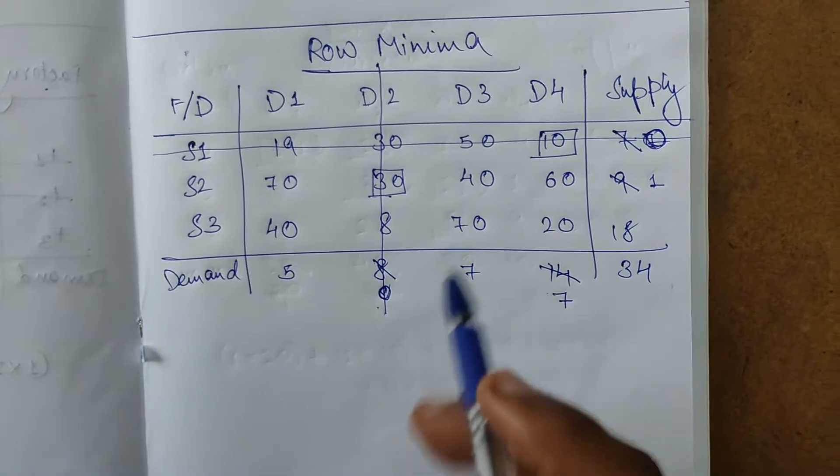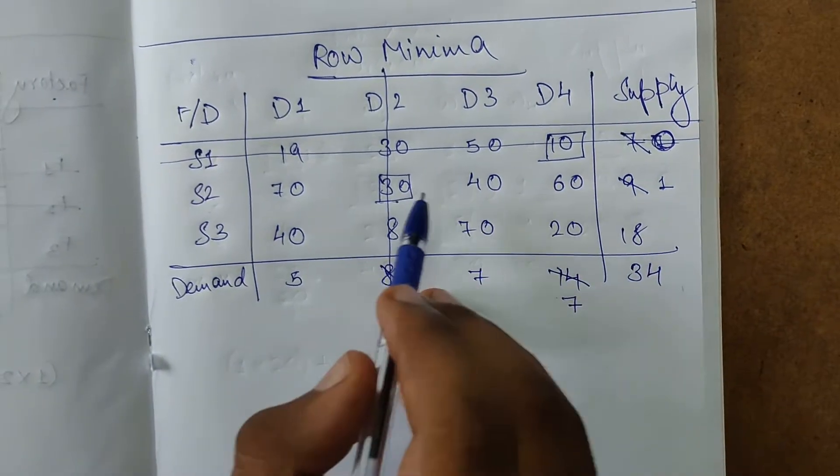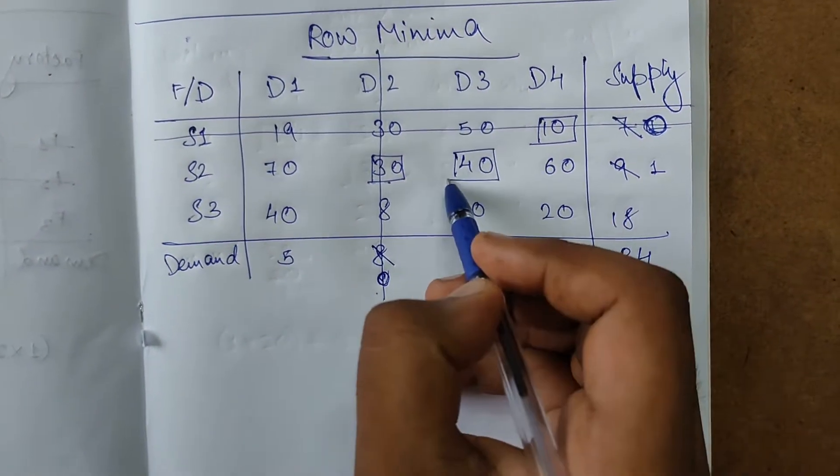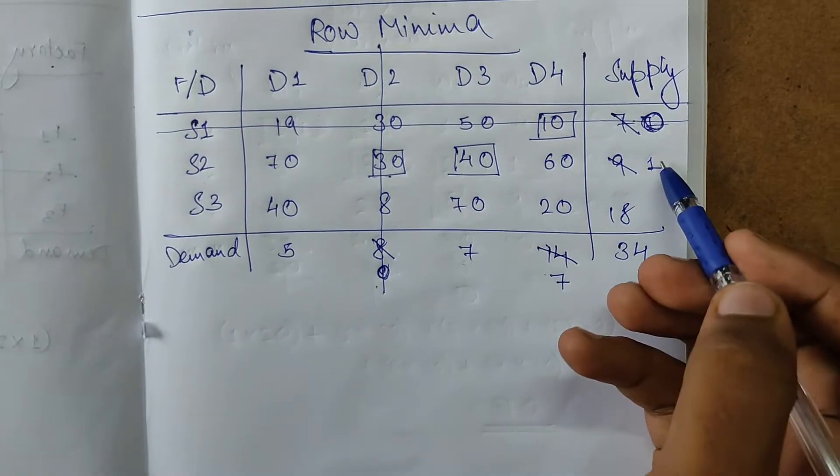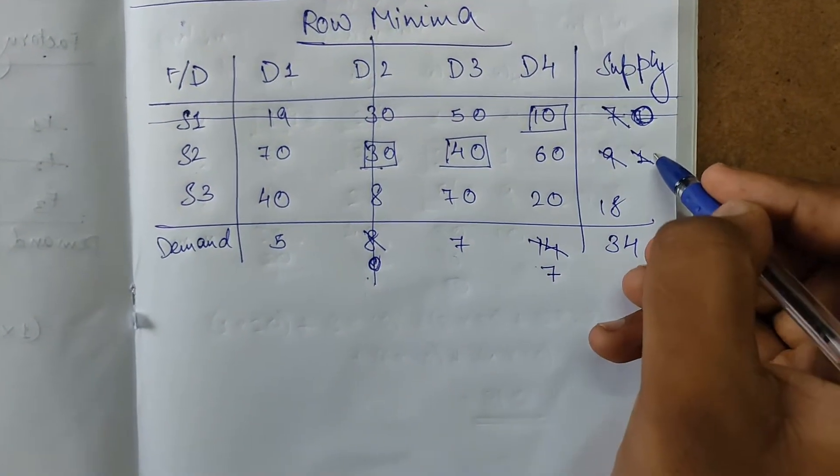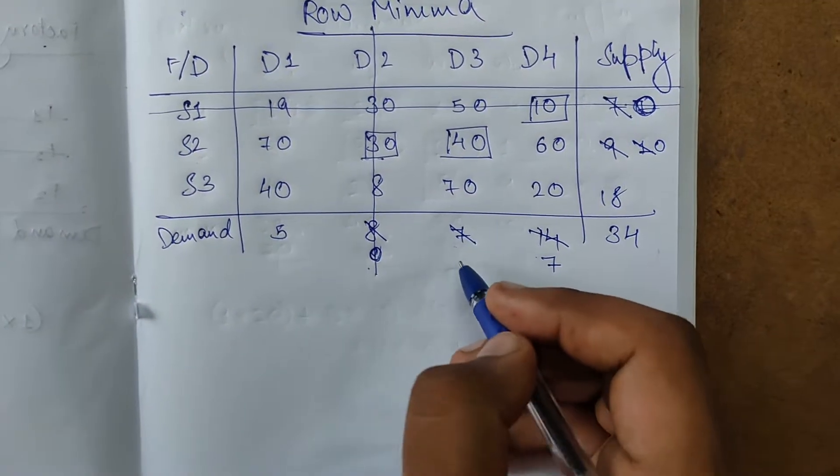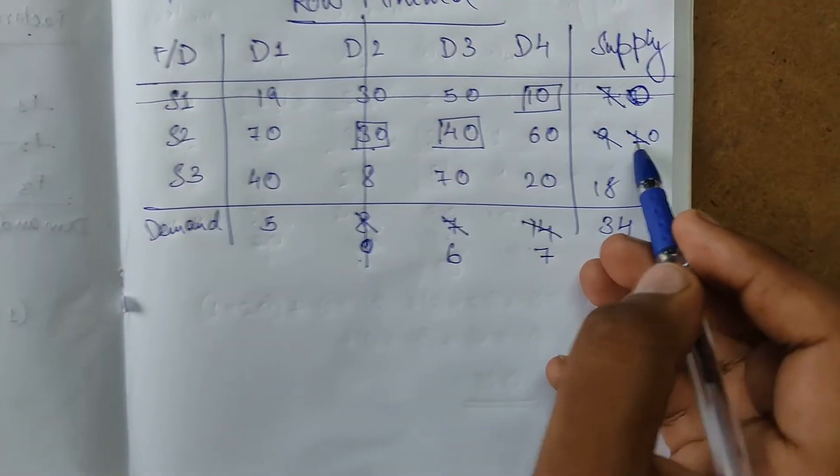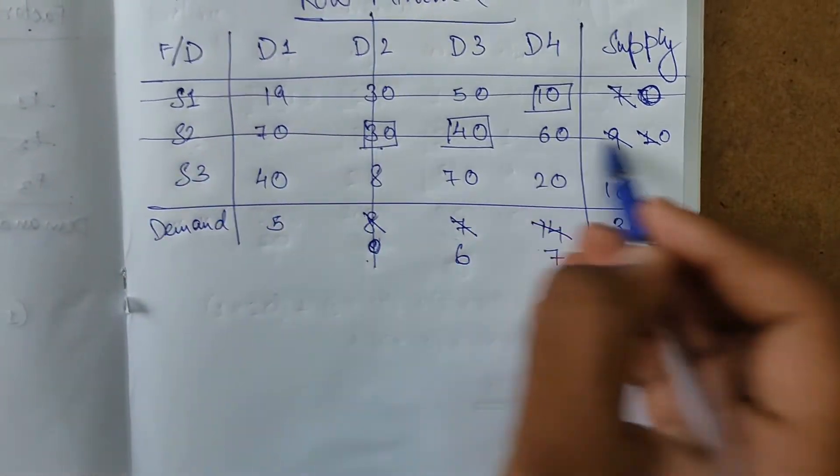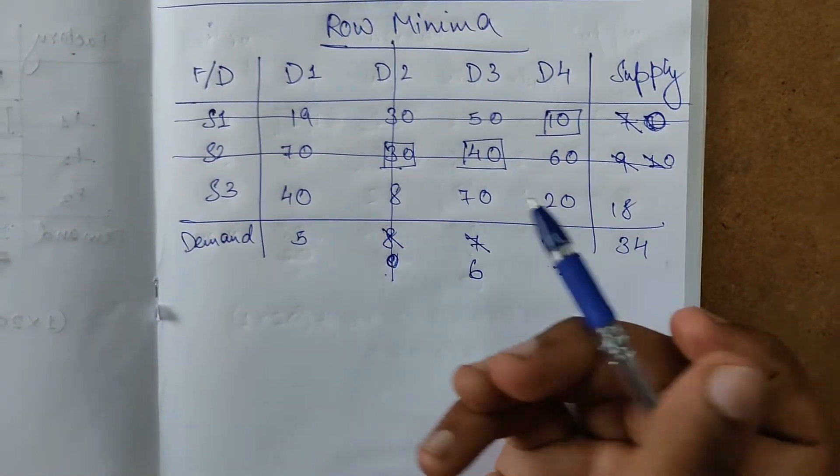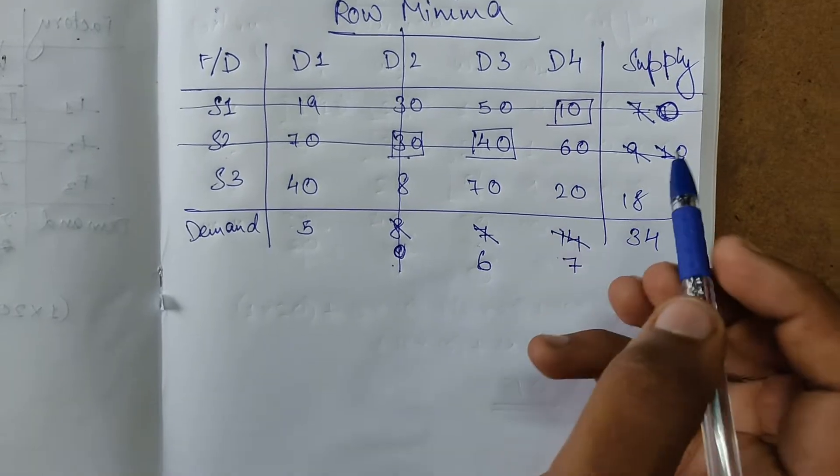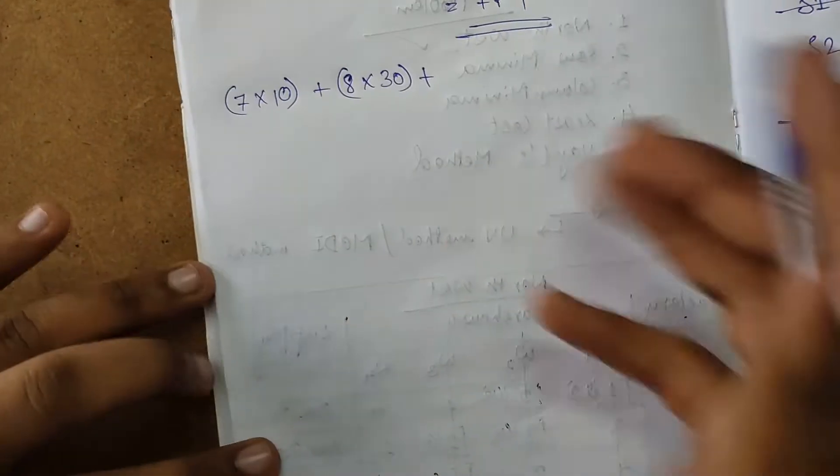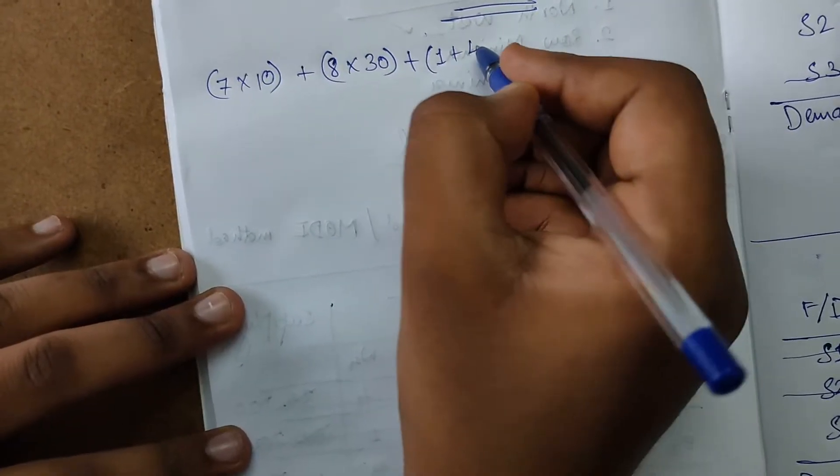Row-wise iterate. Next smallest is 40. We highlight 40 and check 7 and 1, so 1 will be struck off. 1 minus 1 is 0, 7 minus 1 is 6. Allocation is on this side, we strike off this row. Subtracted 1, so solution is plus 1 into 40.